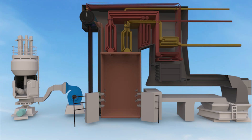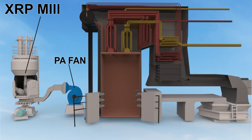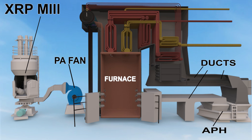Here we can see an XRP coal mill, PA fan at the bottom, furnace, air preheater, and various ducts.